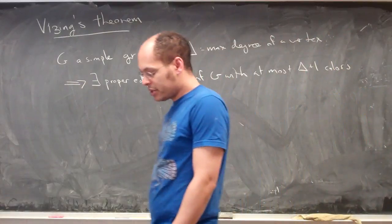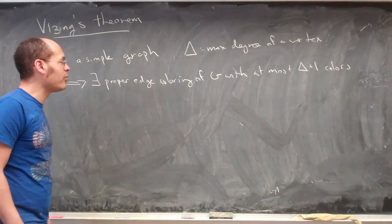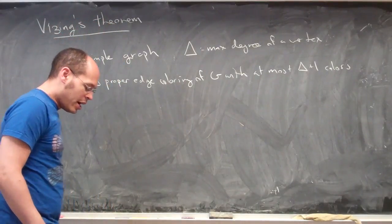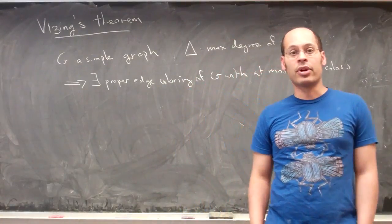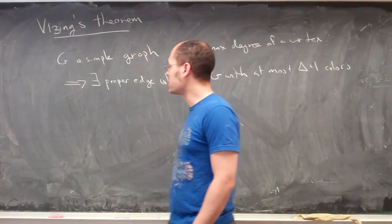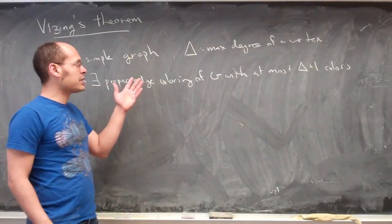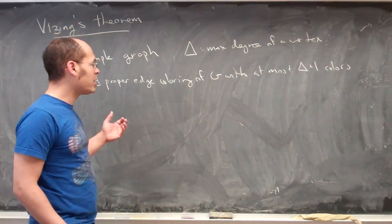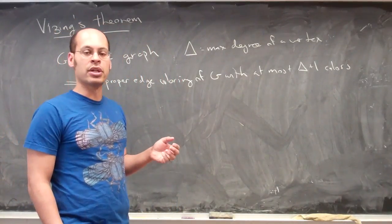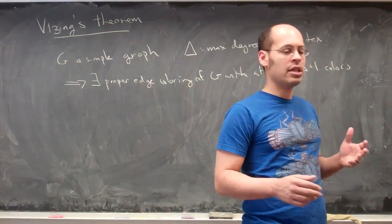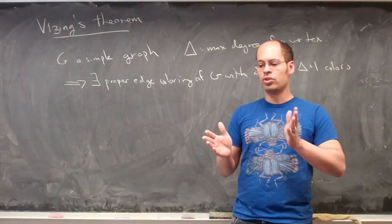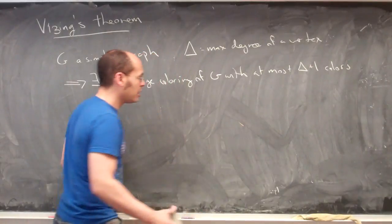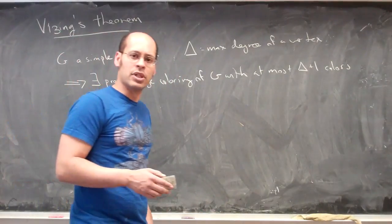My goal in this lecture is to see how far I can get along the proof of Vizing's theorem — I plan to actually do the whole thing. Vizing's theorem says that if you have a simple graph with no loops or repeated edges, and if delta is the maximum degree of any vertex in the graph, then you can find a proper edge colouring of the graph with at most delta plus one colours. A proper edge colouring means you've assigned some colour to every edge such that no two adjacent edges receive the same colour. This is a really nice result, so let's talk through the proof.